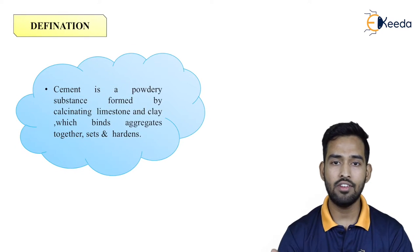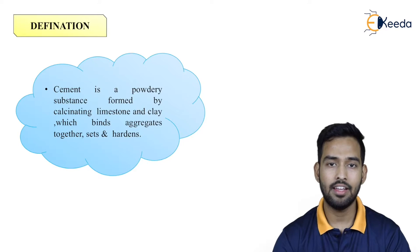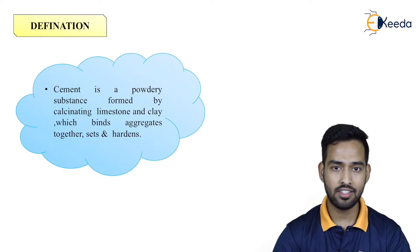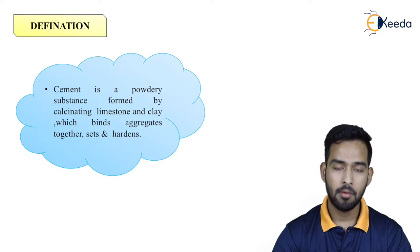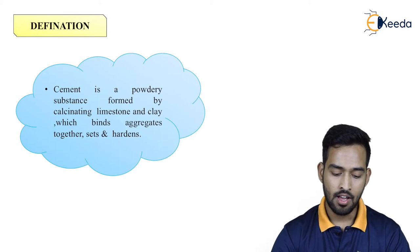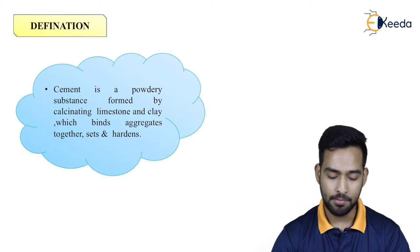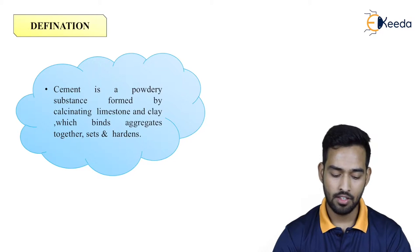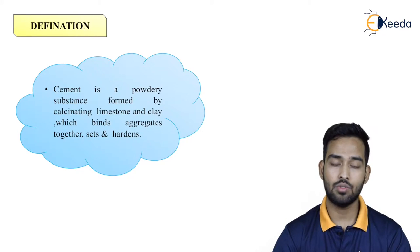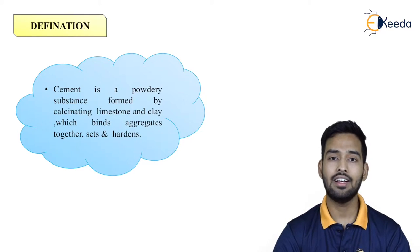Cement, which is the most important material in the construction industry, is formed by using different components. What is the definition of cement? Cement is a powdery substance formed by calcinating limestone and clay, which binds aggregates together, sets and hardens.